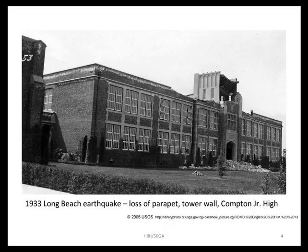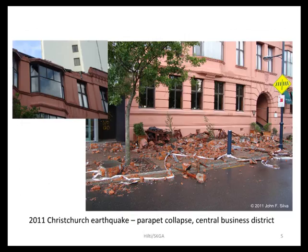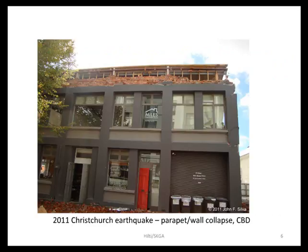Parapets were the first thing that people focused on that were not specifically related to the structure itself, but that could cause a lot of injury to people either in the street or trying to get out of the building. This is parapet damage from the 2011 earthquake — the second earthquake in Christchurch — which pretty much destroyed the downtown central business district. These were buildings that for the most part had been addressed from a seismic standpoint, but obviously the attempts to stabilize the parapets were unsuccessful in many cases.